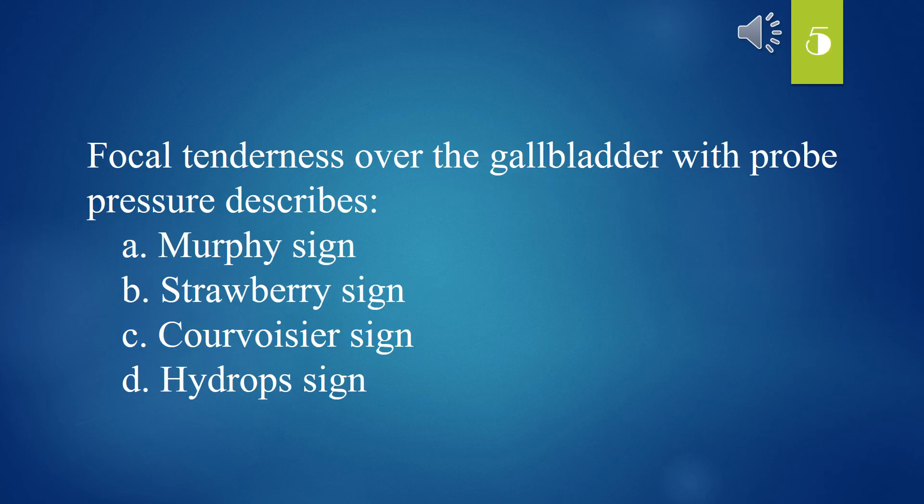Focal tenderness over the gallbladder with probe pressure describes: A. Murphy sign. B. Strawberry sign. C. Courvoisier sign. D. Hydrops sign. The answer is A. Murphy sign.